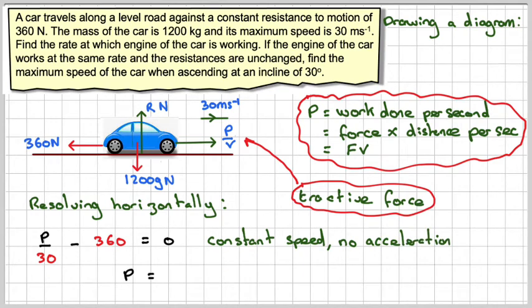So from that, we can find that the power is going to be 30 times 360, which is 10,800 watts or 10.8 kilowatts.